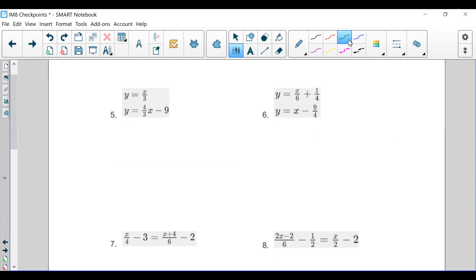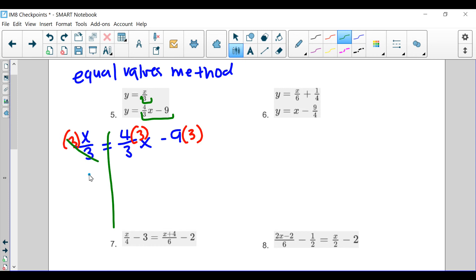So, number 5 is what we have next. We have the y is equal to this and y is equal to this. So, what you're going to do is you're, again, going to use that equal values method where we make them equal to each other. So, we're going to make x over 3 equal to 4 over 3 x minus 9. Now, what's going to happen is we are going to eliminate those denominators. How do you eliminate them? By multiplying by them. So, we're going to multiply by 3 here. What we do to 1, we do to all. We multiply everything by 3. You're going to notice these cancel out. Get x. These cancel out. Get 4x. And, then this one doesn't cancel out. So, we're ending up with 27.